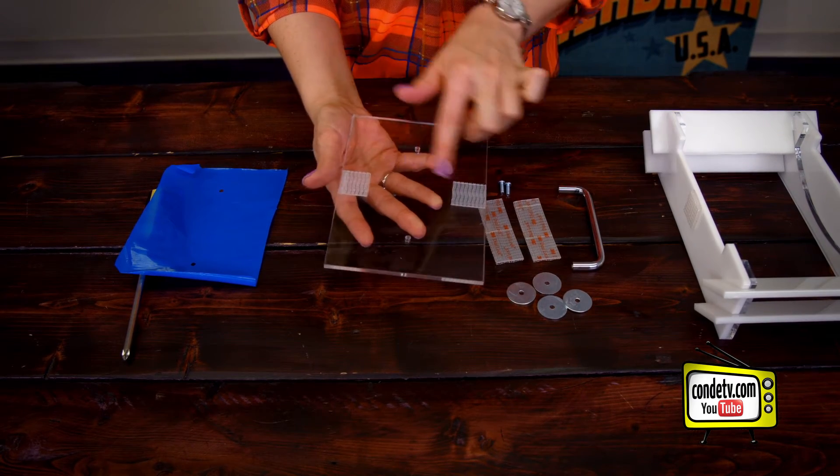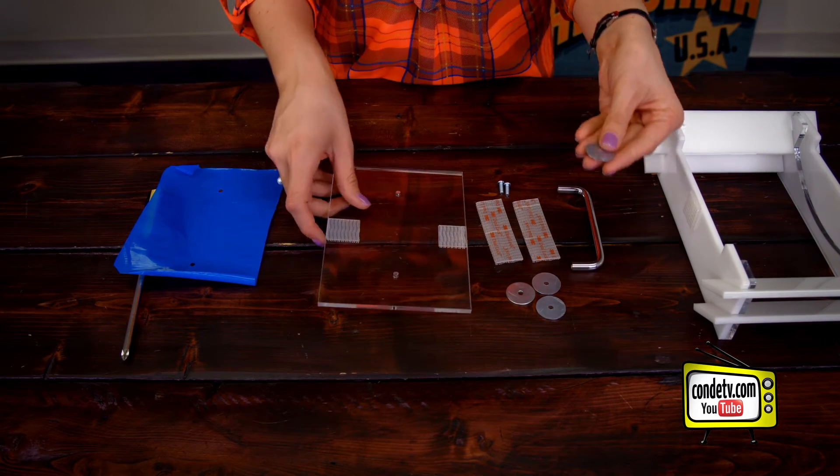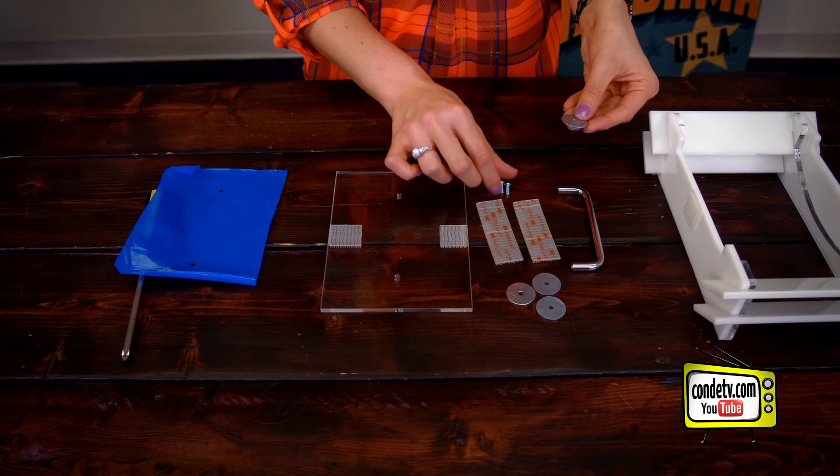Now it is worth noting that the two shorter velcro pieces that are already attached to the lid are going to be the top. However, we're going to be working from the bottom first, so we're going to flip over that lid.